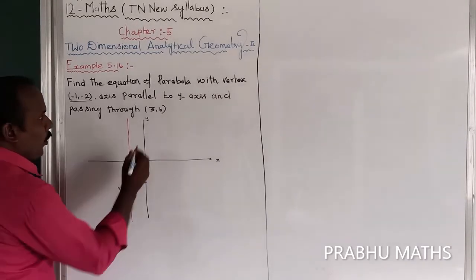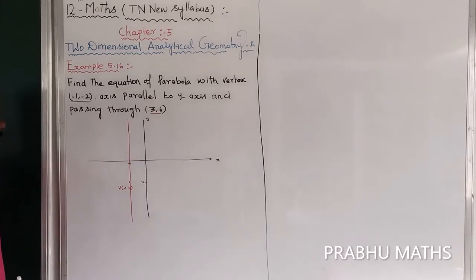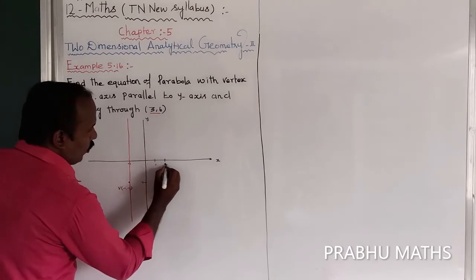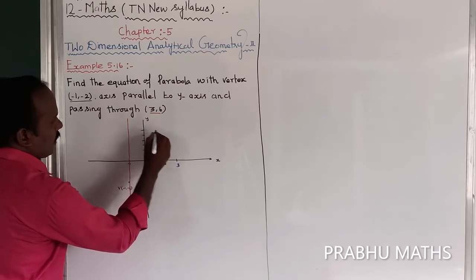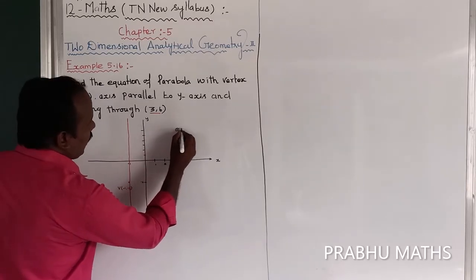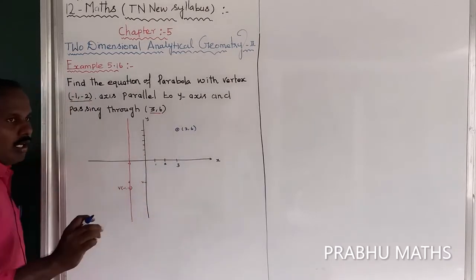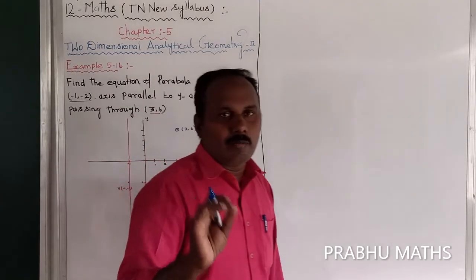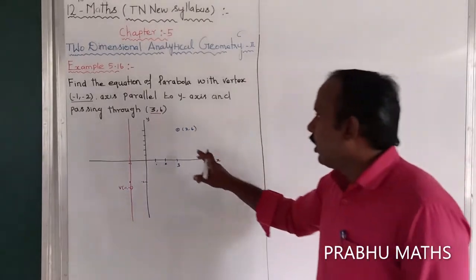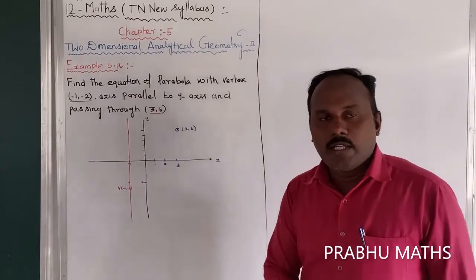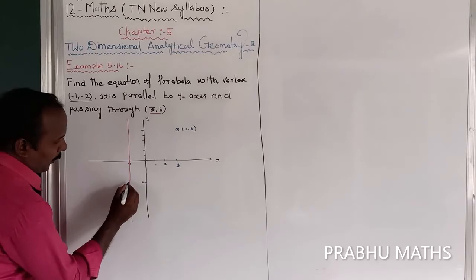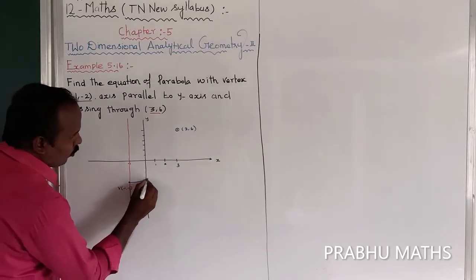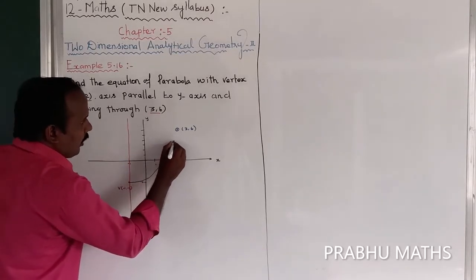The parabola is passing through the point (3, 6). Locating (3, 6) on the graph: x=3, y=6. Since the parabola passes through (3, 6) and must also pass through the vertex (-1, -2), it is definitely an upward open parabola. So this is confirmed as an upward open parabola passing through the point (3, 6).